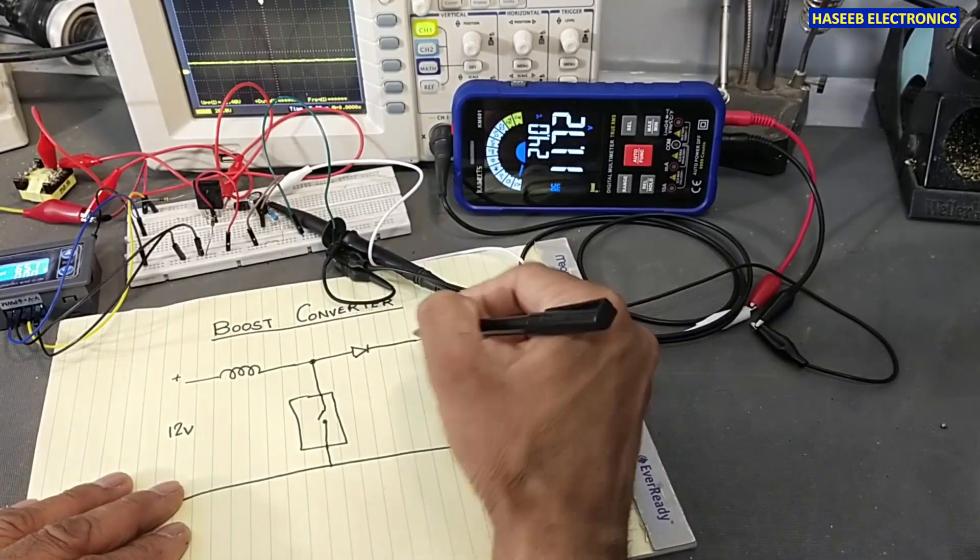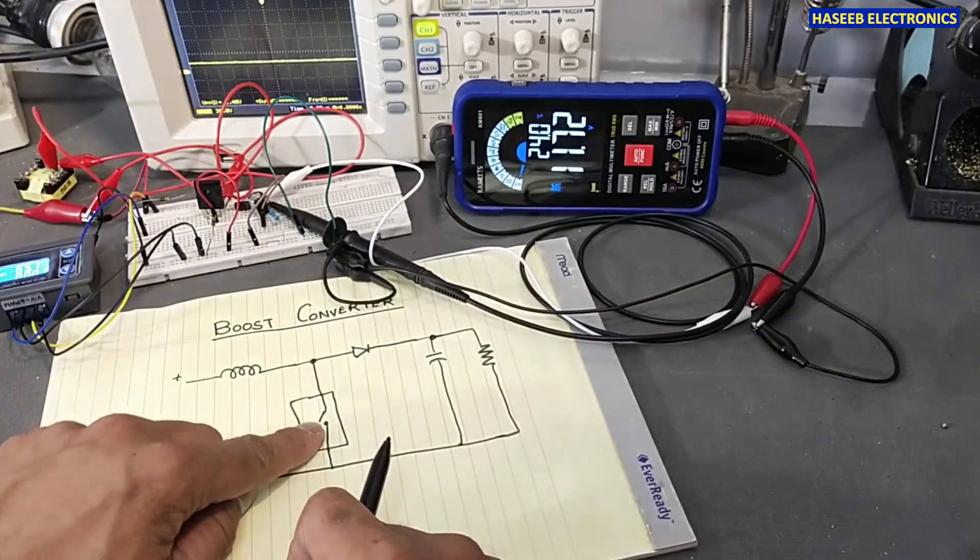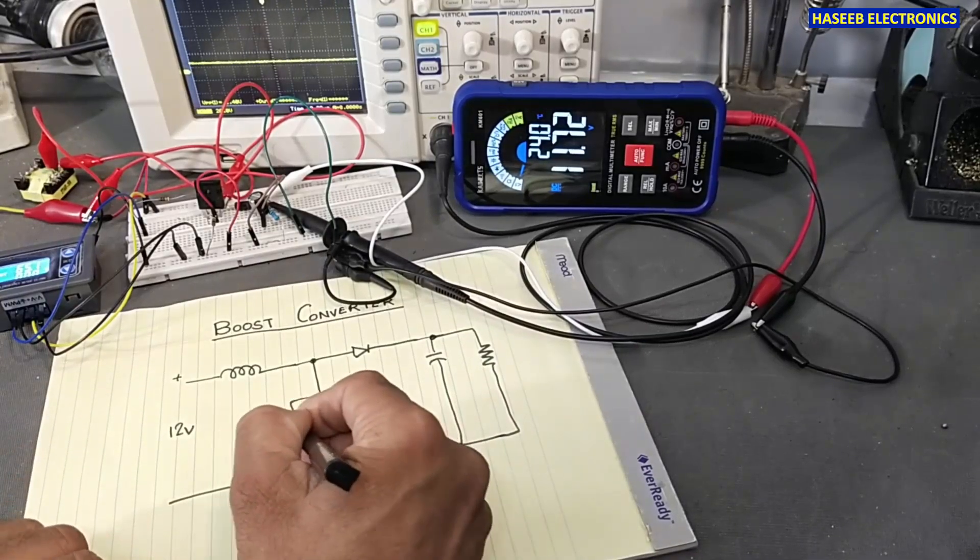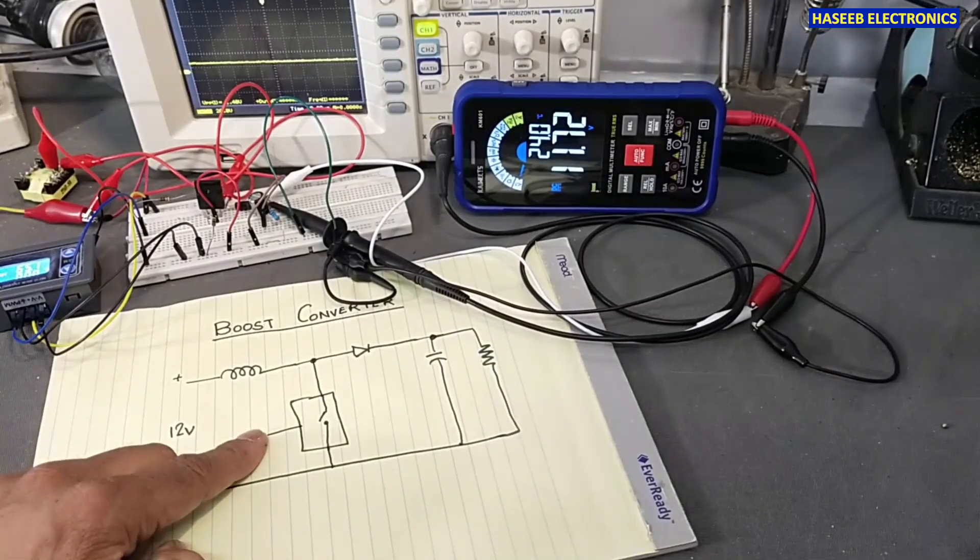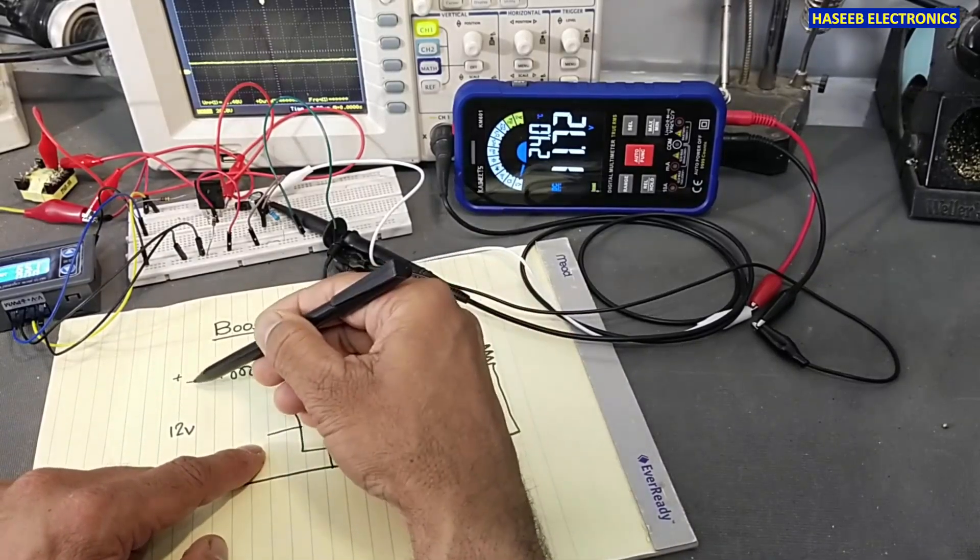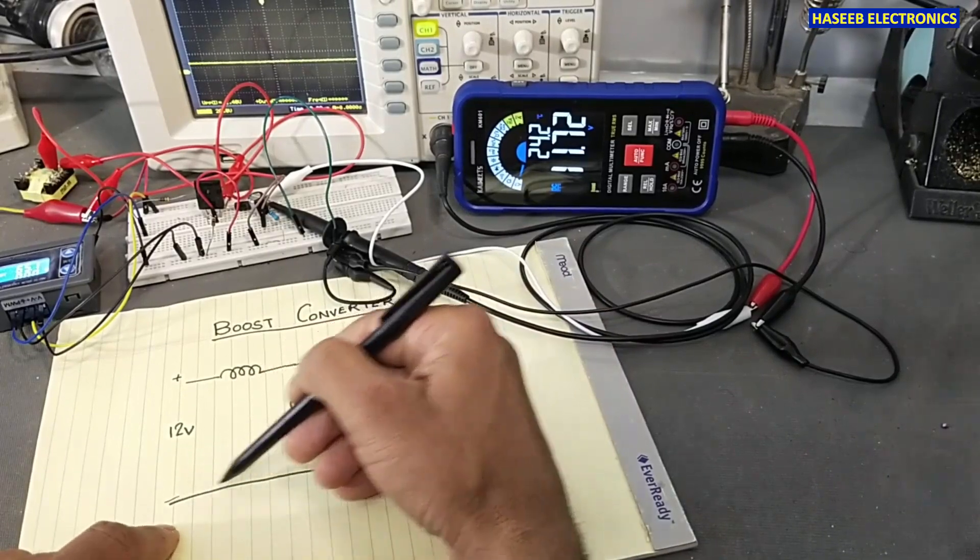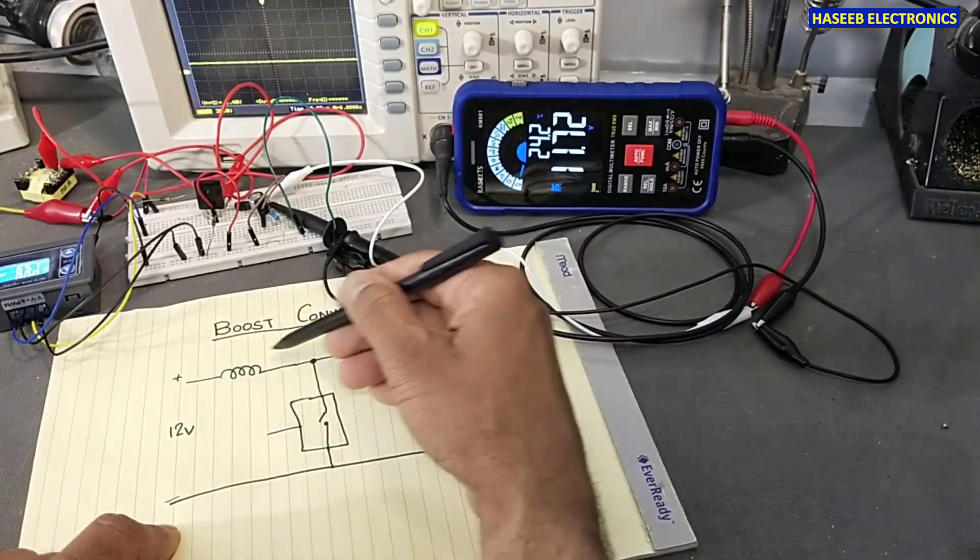But when we will turn on this switch, we will provide a signal here. What will happen? It will make a surge here. This is negative line and this is positive line, so this switch will close.